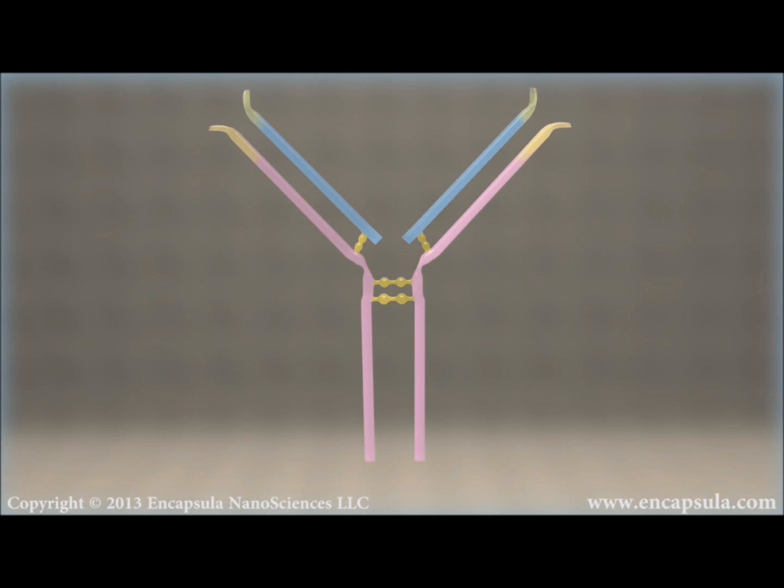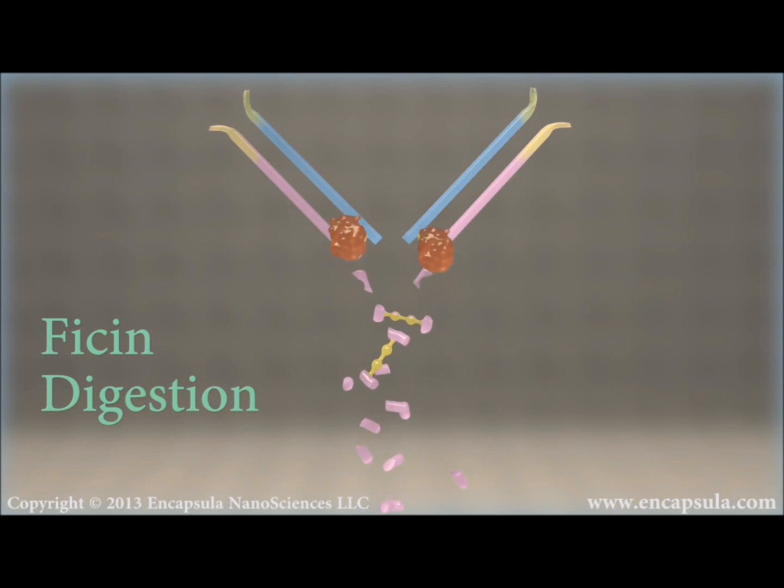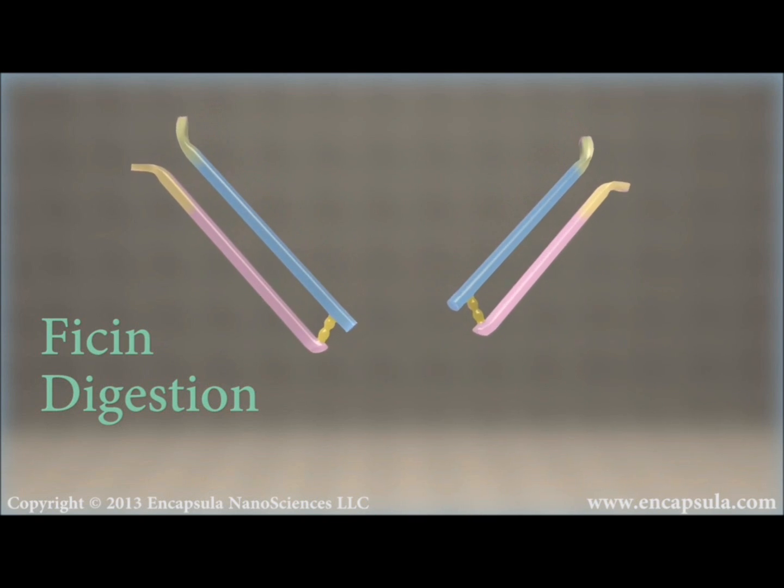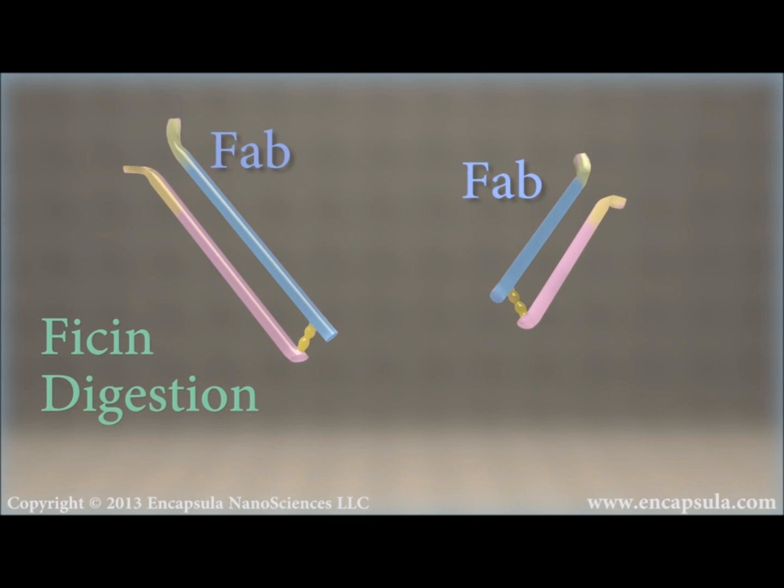Ficin is a thiol protease. Ficin hydrolyzes the peptide bonds at the carbonyl group of either phenylalanine or tyrosine. Ficin digests the antibody and generates two Fab' fragments. Fab' does not have any available sulfurs; therefore, any conjugation reaction should happen through the N-terminus. The Fc region is fragmented into small pieces during digestion.